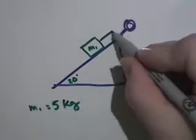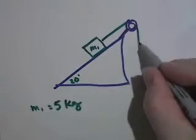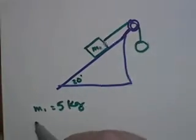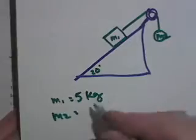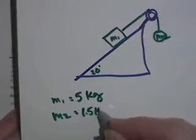And the other, M2 is 1.5, is freely suspended. This is M2 and that's, what does it say, 1.5 kilograms? 1.5 kilograms.